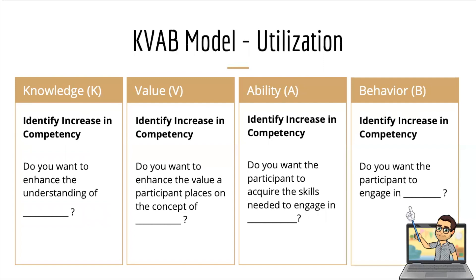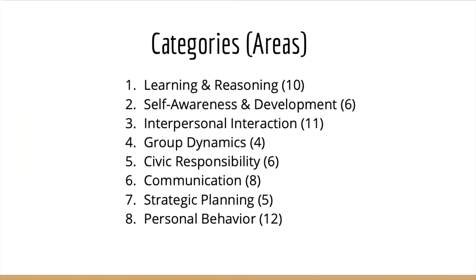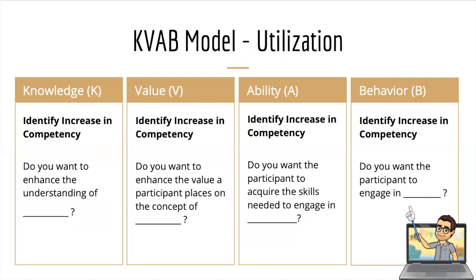To specifically utilize the KVAB model, starting with knowledge, we want to identify the increase in competency. Using learning and reasoning as an example: do you want to enhance the understanding of learning and reasoning? That's the knowledge area — choosing where the competency is wanting to increase. For value: do you want to enhance the value that the participant places on the concept of the category you choose? This could involve convincing individuals that specific competencies are important for their future career or collegiate leadership experience.